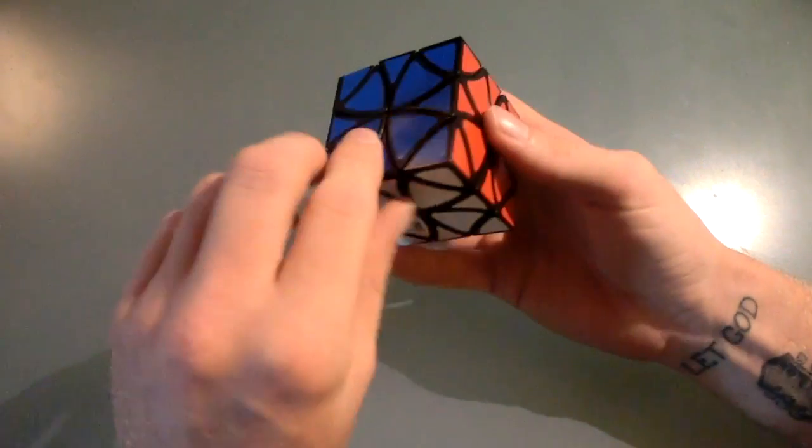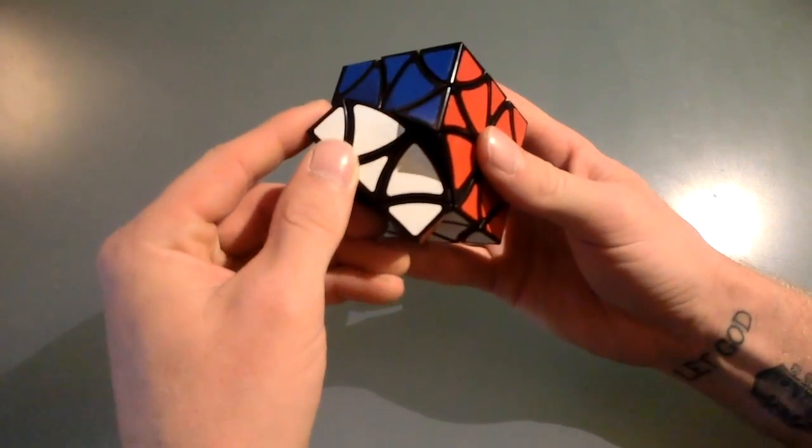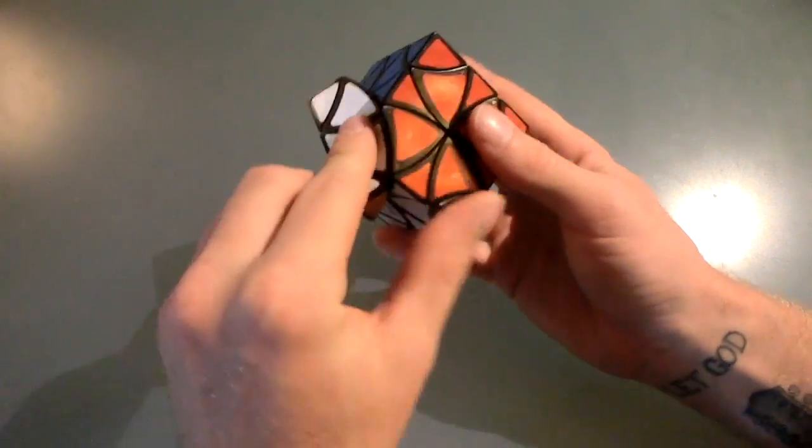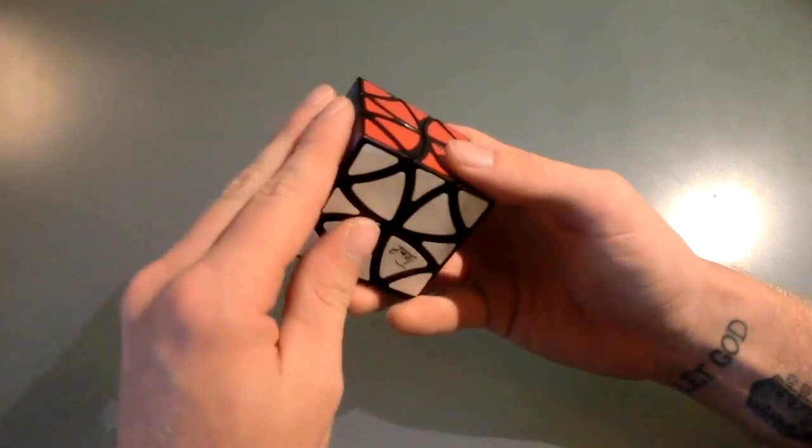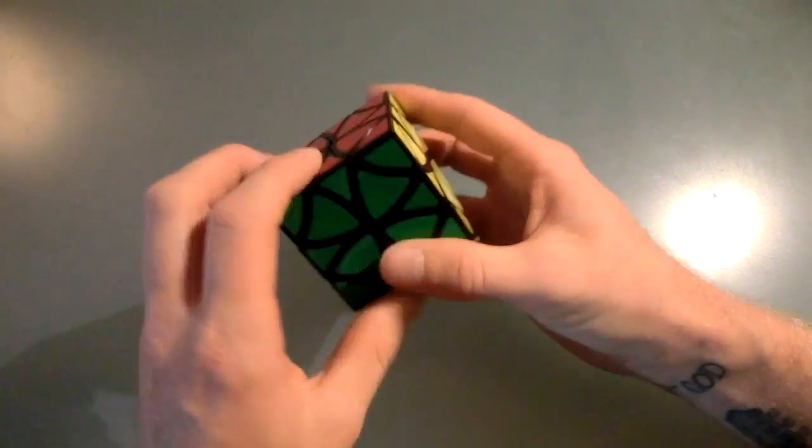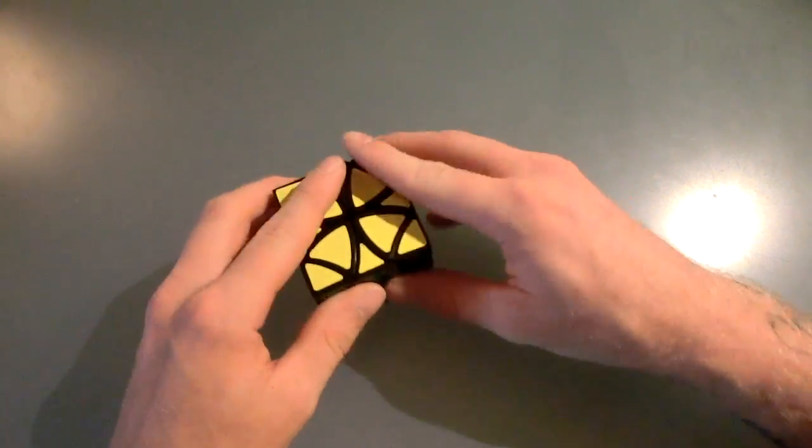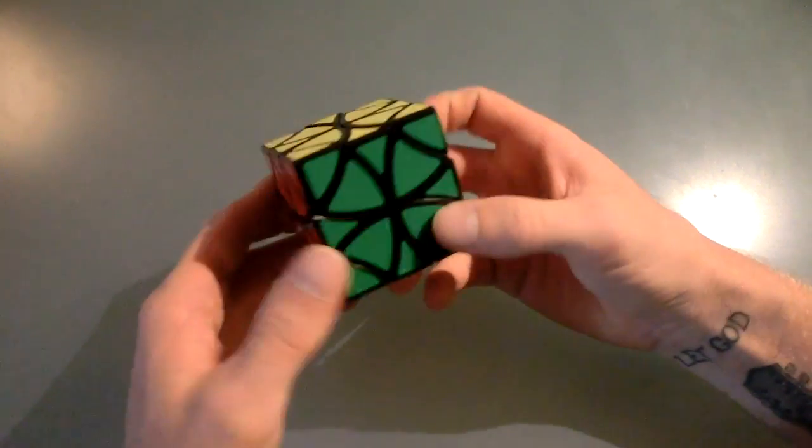And I do find sometimes, too, that while I'm turning it like this, all of a sudden, it'll jumble itself. I don't mean to jumble it, but it just happens, and I'm not going to jumble it quite yet. I'm going to learn how to solve it without looking at any cheat sheets before I start the jumbling process.